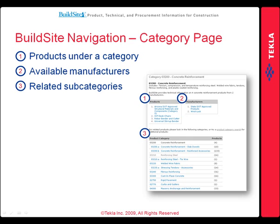Viewing documentation on a product in a particular category is easy. When searching within a particular category, the products under that category are listed, along with a list of manufacturers who provide these products as well as any related product subcategories. All search results — whether products, manufacturers, or subcategories — are hyperlinked for easy cross-navigation.